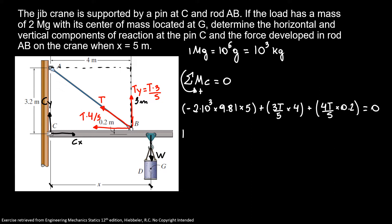Here I'm gonna have 12.8T over 5 equals 98,100 newtons. Solving this, I have my tension is equal to 38,320 newtons, or to simplify, my tension is 38.3 kilonewtons. So here we found the tension developing in the rod AB.